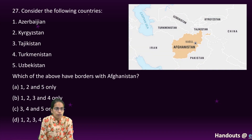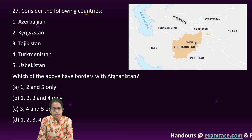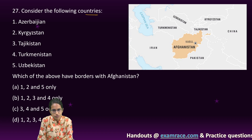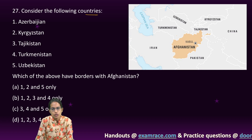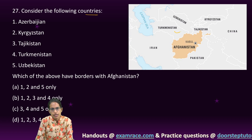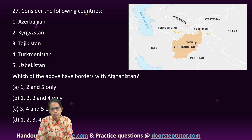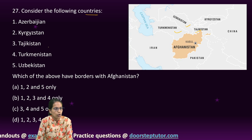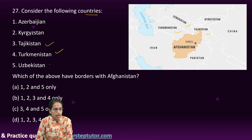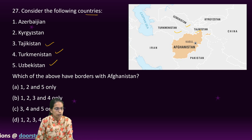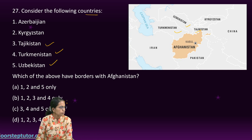Which of the following countries border Afghanistan? Similar questions have been asked every year. As you can see on the map, Turkmenistan, Uzbekistan, and Tajikistan are three of the nations that border Afghanistan. So options three, four, and five are the correct answers for this question.